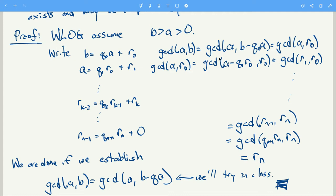The GCD of a and b is the same as the GCD of a with b minus q0*a, and b minus q0*a is just r0. So GCD(a, b) = GCD(a, r0). The same argument tells you that GCD(a, r0) = GCD(r0, r1), so you get a chain: GCD(a, b) = GCD(a, r0) = GCD(r0, r1) = GCD(r1, r2), and so on.